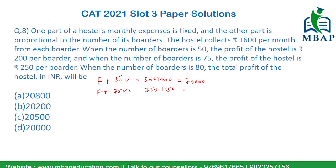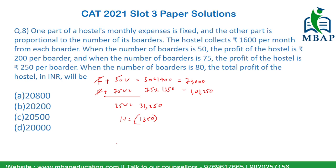By subtracting the first equation from the second to eliminate f, 25v equals 31,250, so the cost of one variable unit v is 1250. Now we need to find the cost for 80 people staying inside.